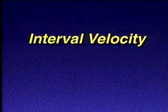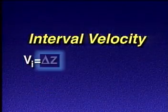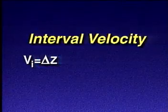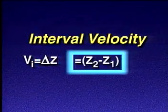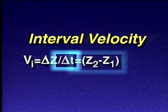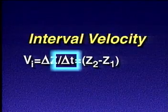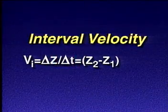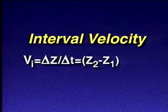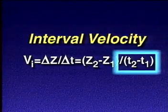We define interval velocity, vi, as the thickness of a particular layer, delta z, or z2 minus z1, divided by delta t, the time it takes to travel from the top of the layer to the base of the layer, or t2 minus t1.